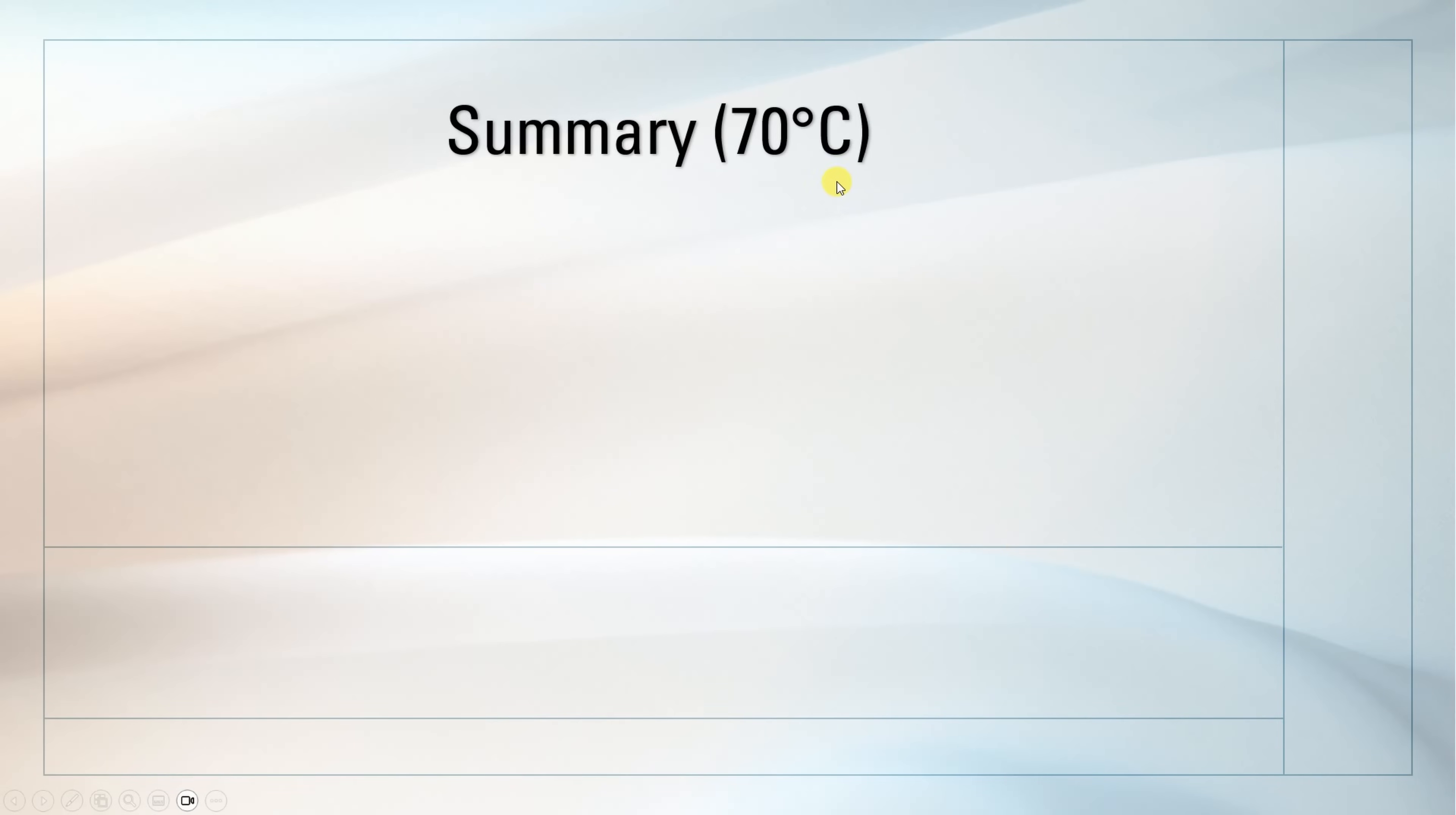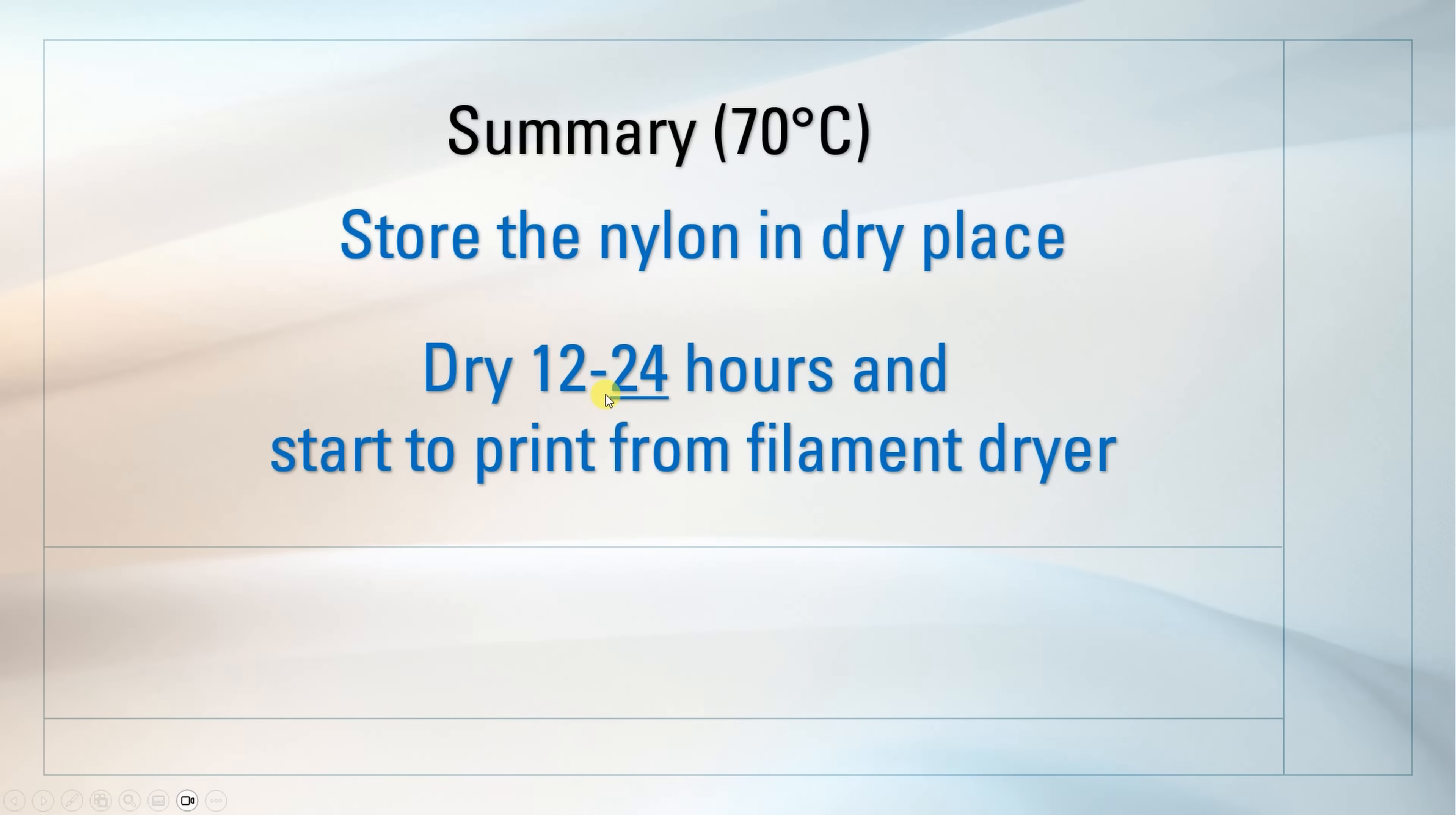Summary on 70 degrees Celsius drying, because currently only this kind of dryers we have. Store the nylon in dry place, very important. And dry it, well, if possible, 24 hours. And then start to print from the filament dryer. And during the drying, it is important to rotate the spool manually every maybe one or two hours. Of course, during the printing not necessary, because it will be rotated by unrolling.